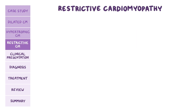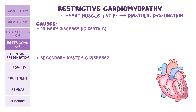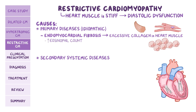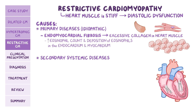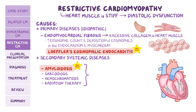In restrictive cardiomyopathy, the heart muscle is stiff, preventing it from relaxing during diastole — another cause of diastolic dysfunction, while systole remains normal. Causes include primary diseases, which are often idiopathic, or secondary systemic diseases. An important primary cause is endomyocardial fibrosis, where excessive collagen tissue is deposited in the heart muscle. When associated with elevated eosinophil counts and deposition of eosinophils in the endocardium and myocardium, it is called Löffler's eosinophilic endocarditis. Secondary causes are more common, with the most common being amyloidosis. Other secondary causes include sarcoidosis, hemochromatosis, and radiation therapy, all of which cause fibrosis of the myocardium.